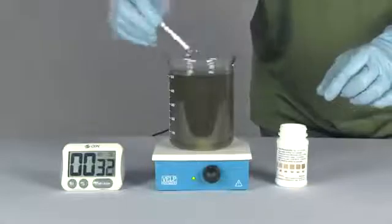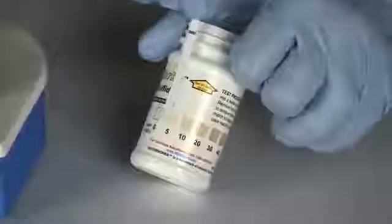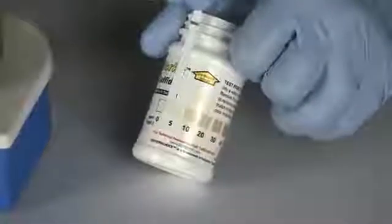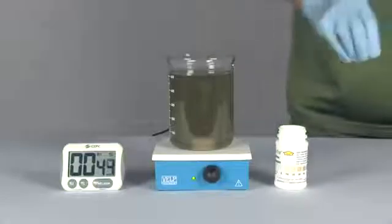At 30 seconds, another reading is taken and the hydrogen sulfide level is measured. The reading is zero parts per million. The Ultra S3 has removed all of the sulfide in less than 30 seconds.